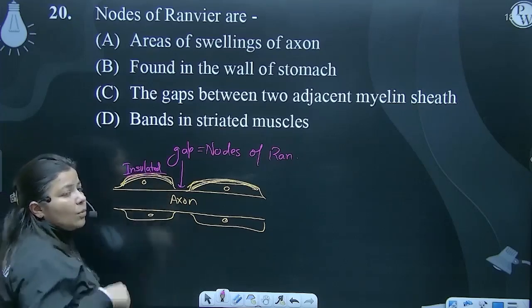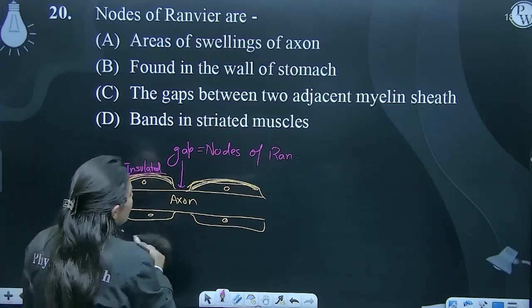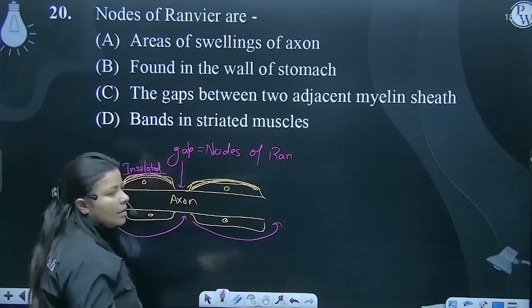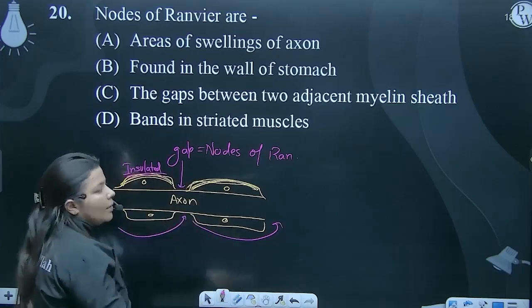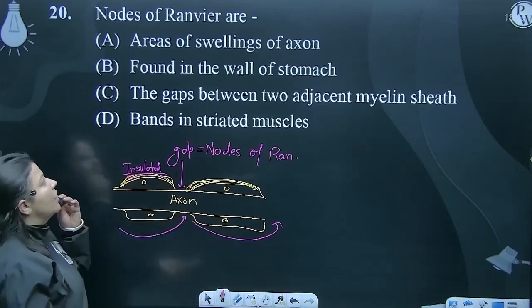Secreted by Schwann cell, and we know saltatory conduction is the fastest route of conduction. Nodes of Ranvier are basically responsible for saltatory conduction.